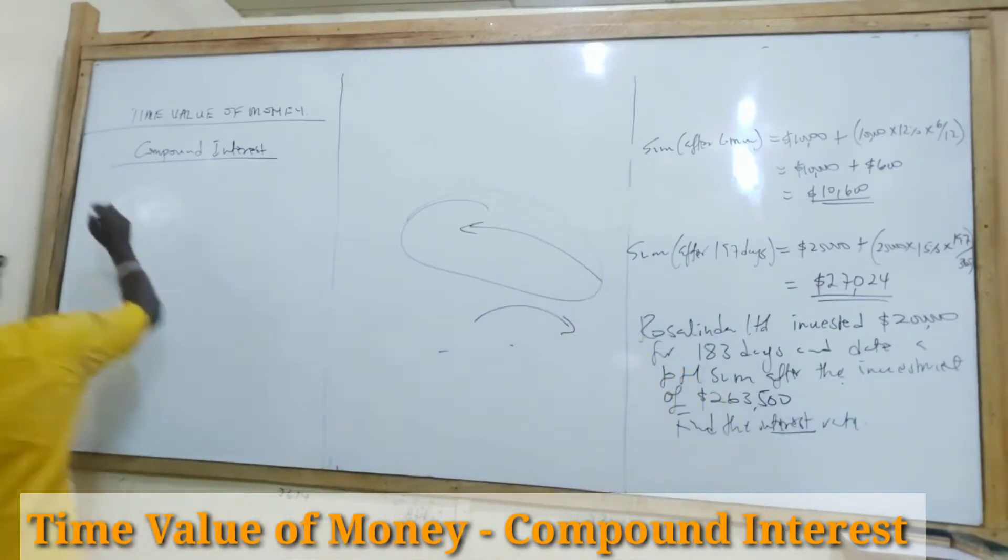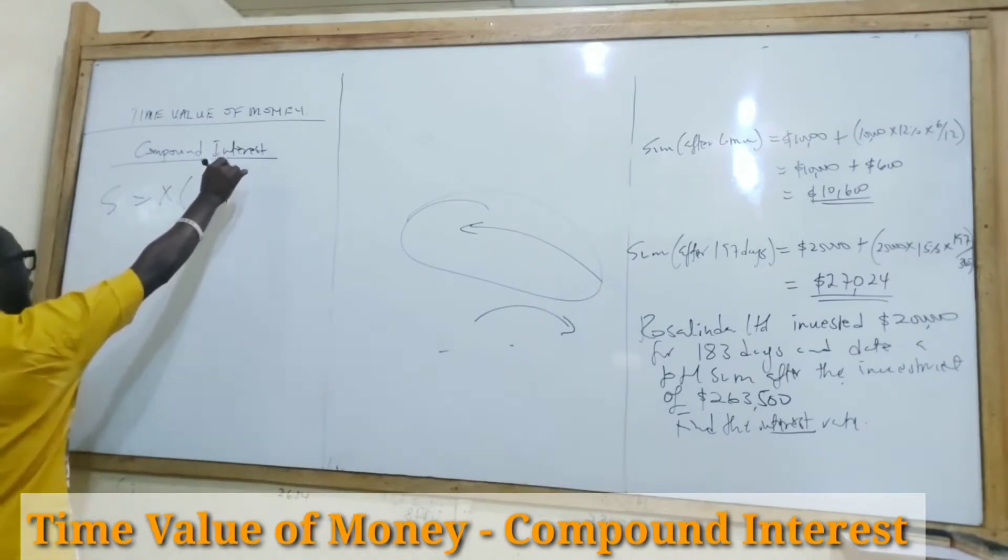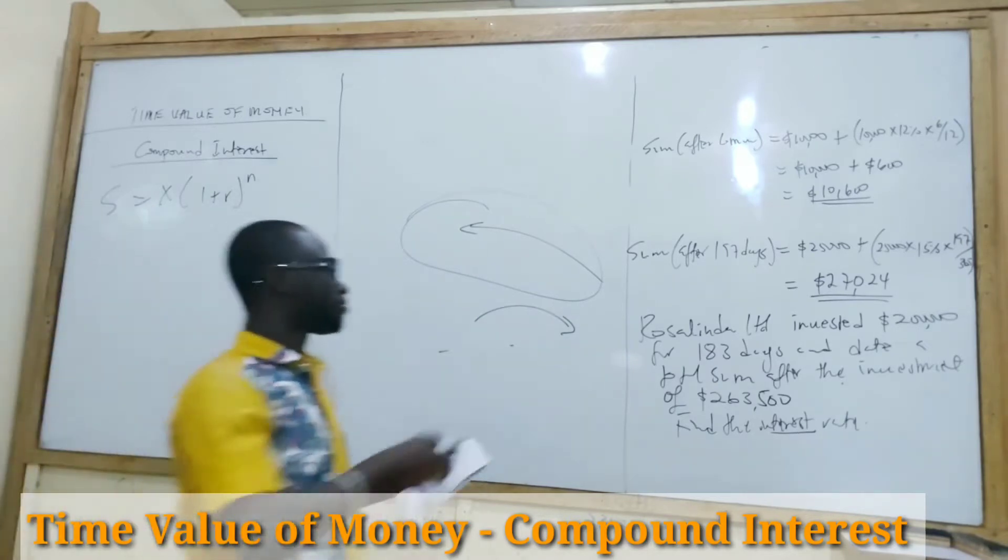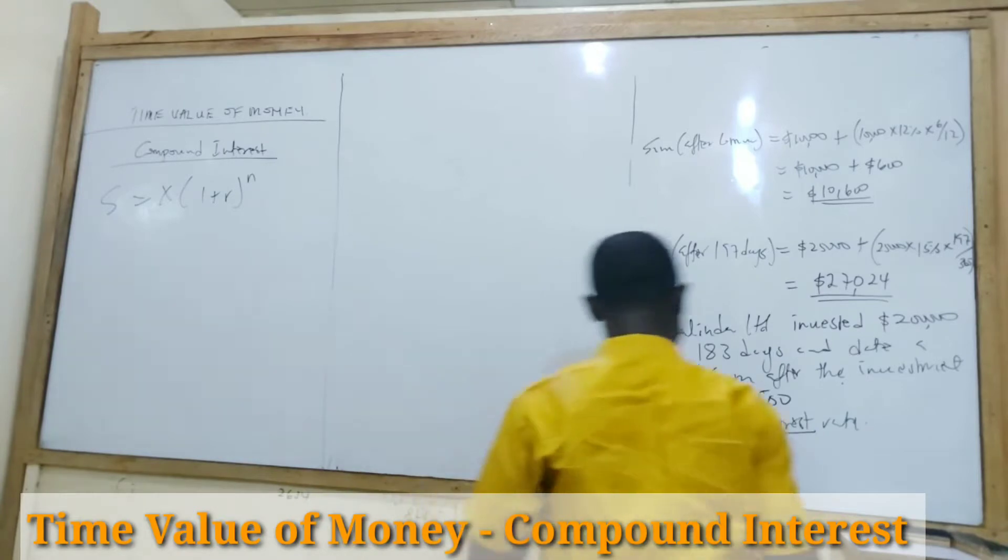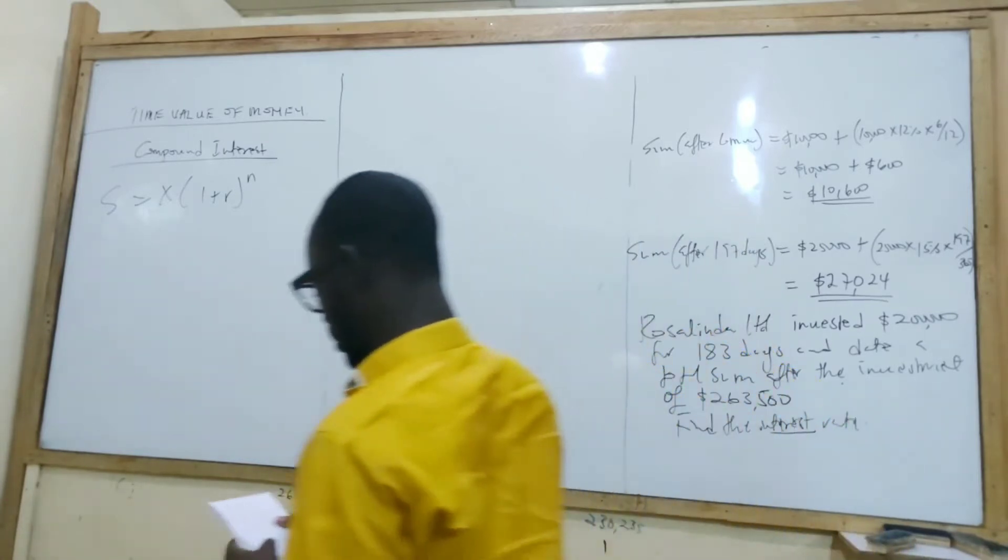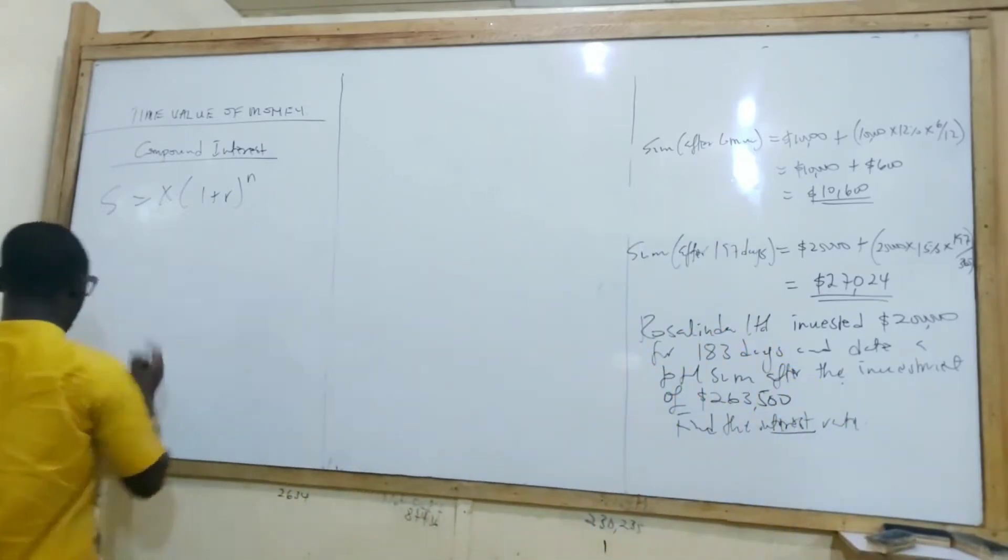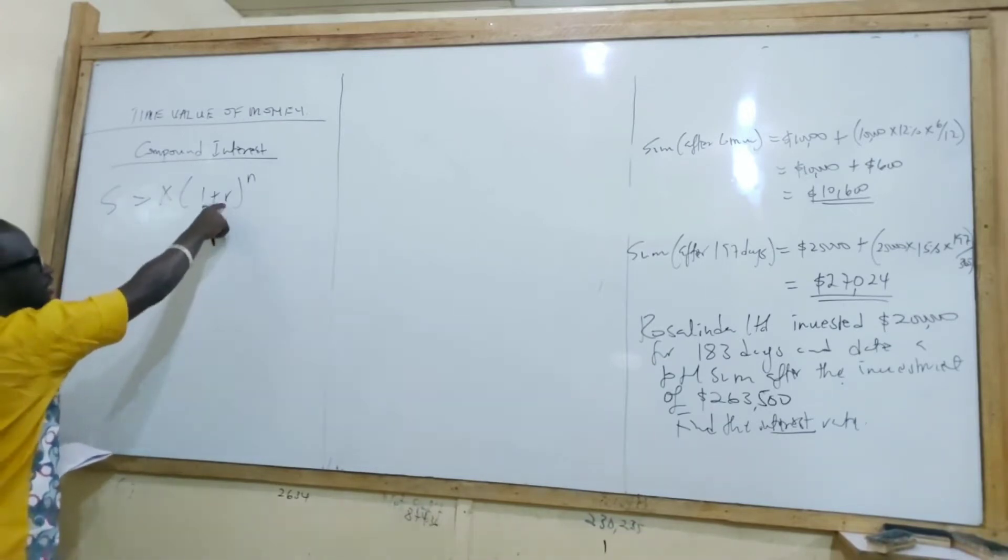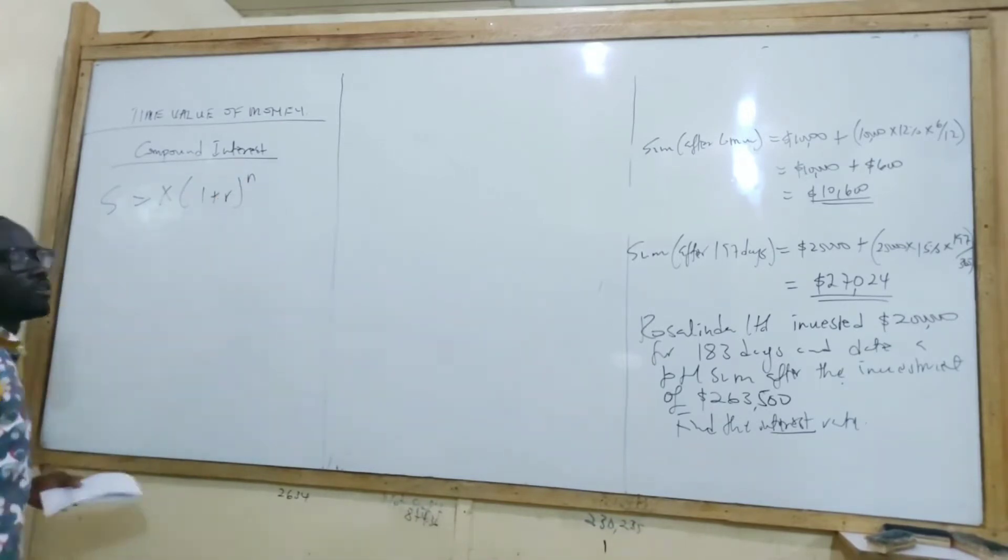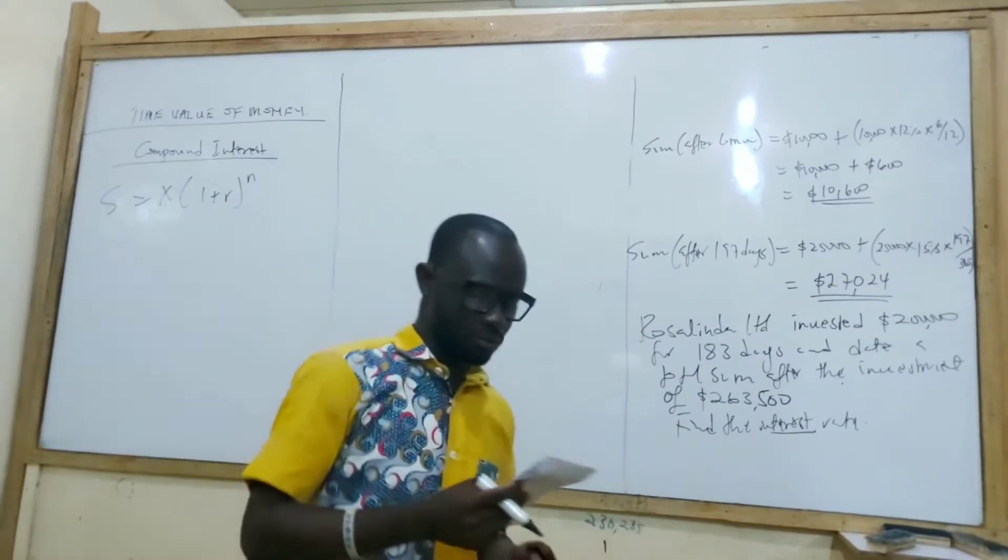Formula-wise, we say S equals X(1 + r)^n. One plus r exponent n. So what does it mean? You know that things that are here already are the same thing. Sum at the end, principal, rate, and then n, the number of periods. So let's do that question. Write it down.